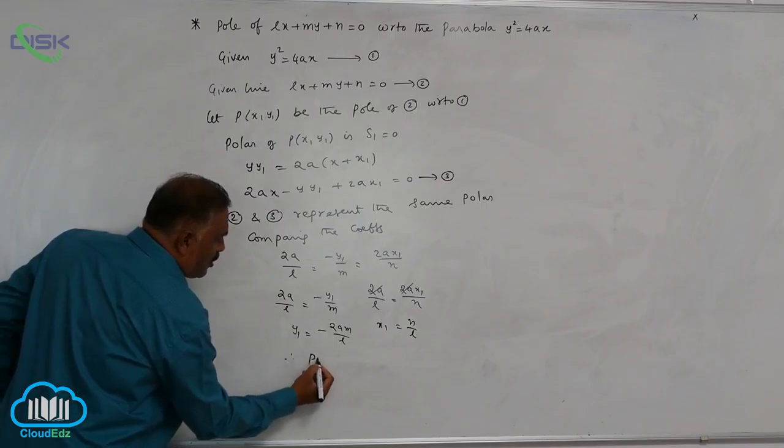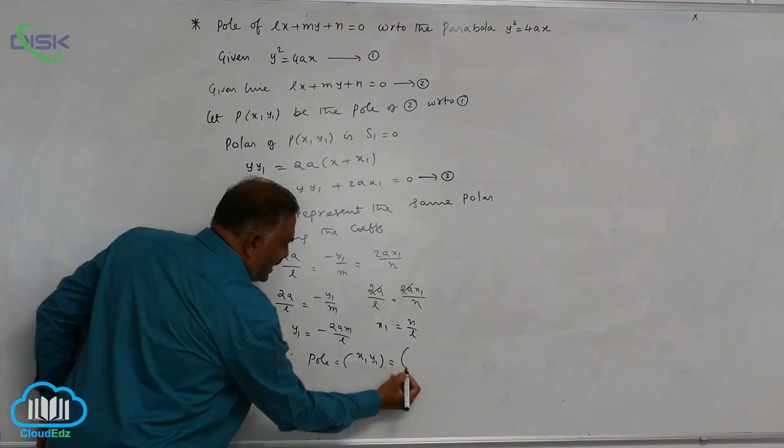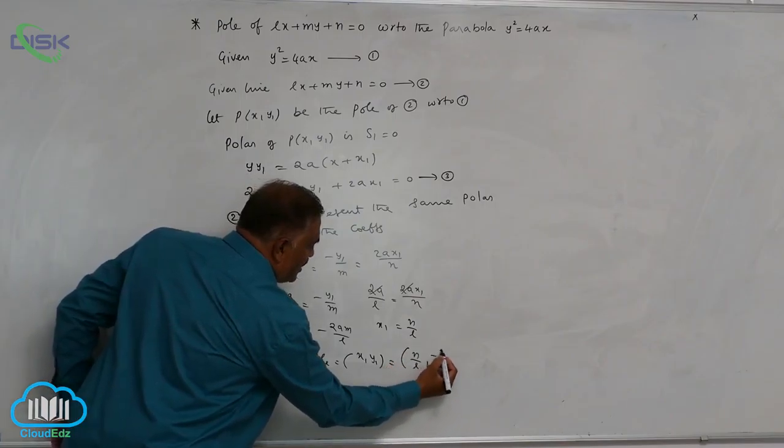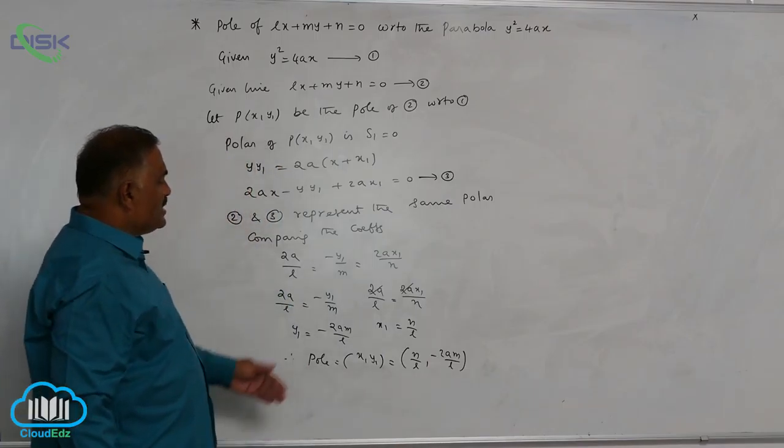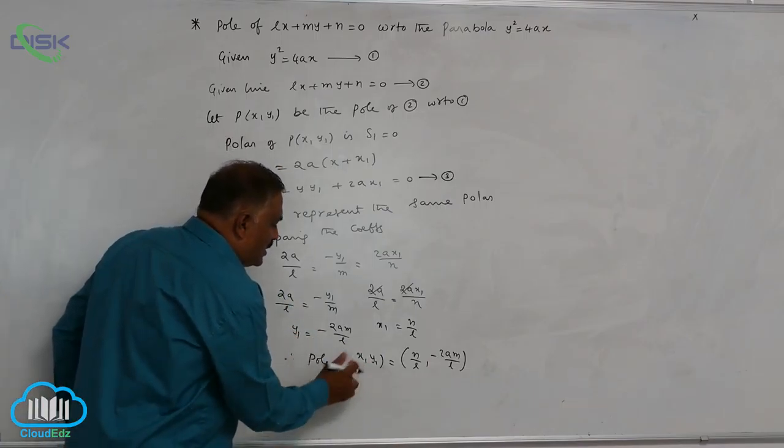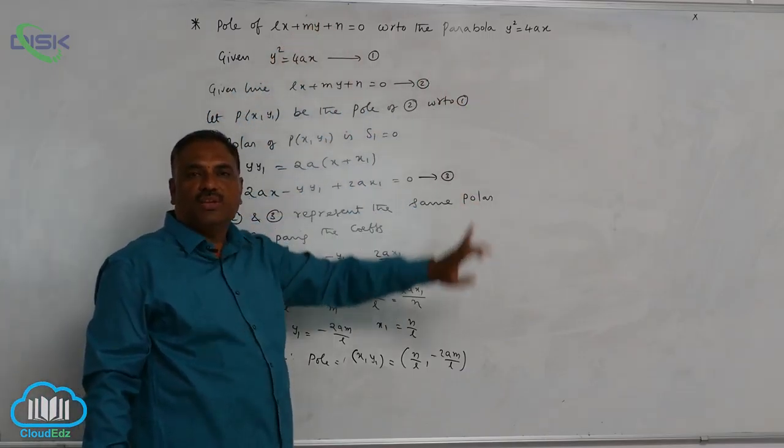Therefore, pole coordinates are given by x1 comma y1 is N by L comma minus 2AM by L. This is how we find out the pole coordinates of a given straight line with respect to the parabola.